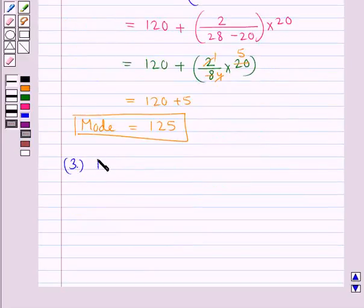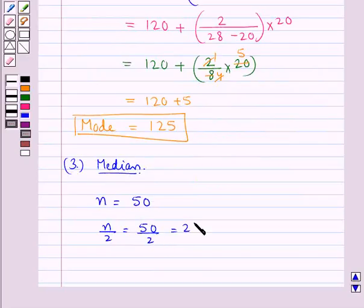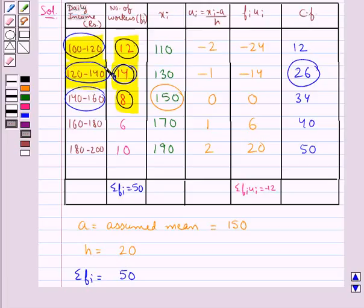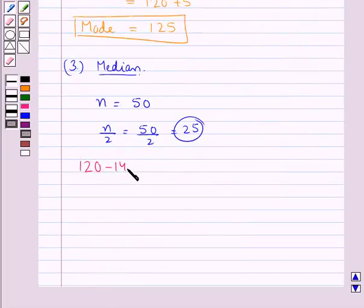Next we will find the median. N = 50, so N/2 = 25. The median class is the class whose cumulative frequency is greater than and nearest to N/2 = 25. Looking at the table, the cumulative frequency greater than or nearest to 25 is 26. So the class interval 120 to 140 is the median class.